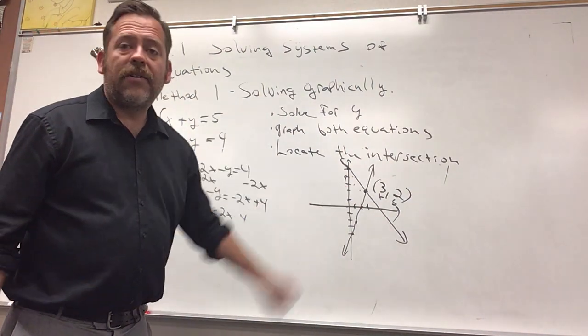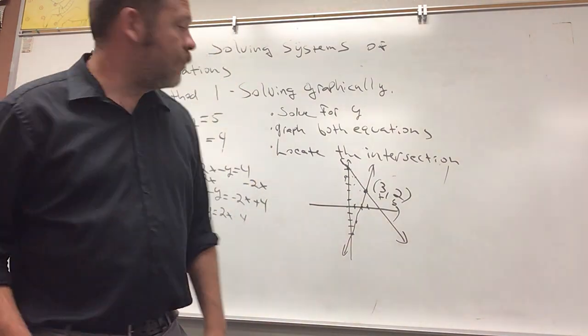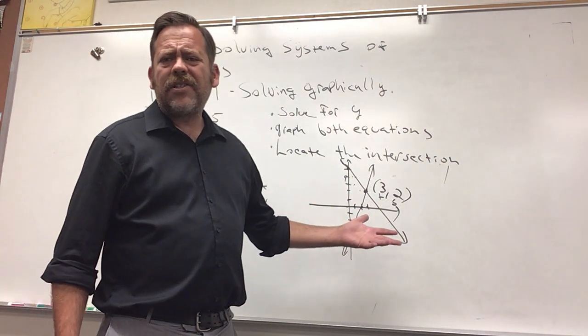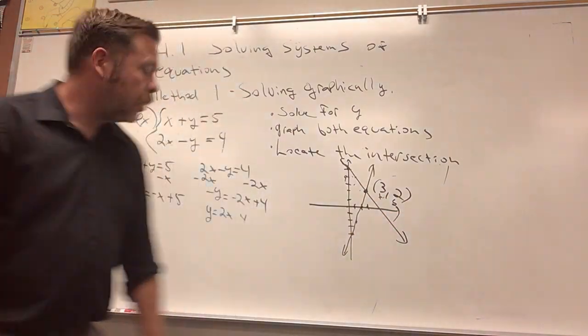Lines can only intersect at one point unless they're the same line, then they intersect an infinite amount of times. But a line can't intersect twice—that's why there can only be just one solution.